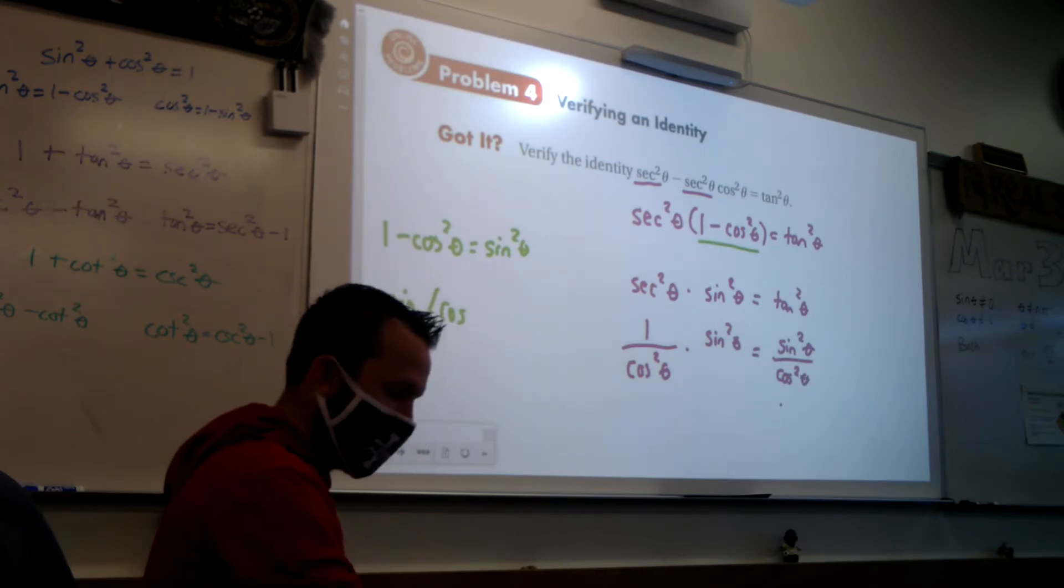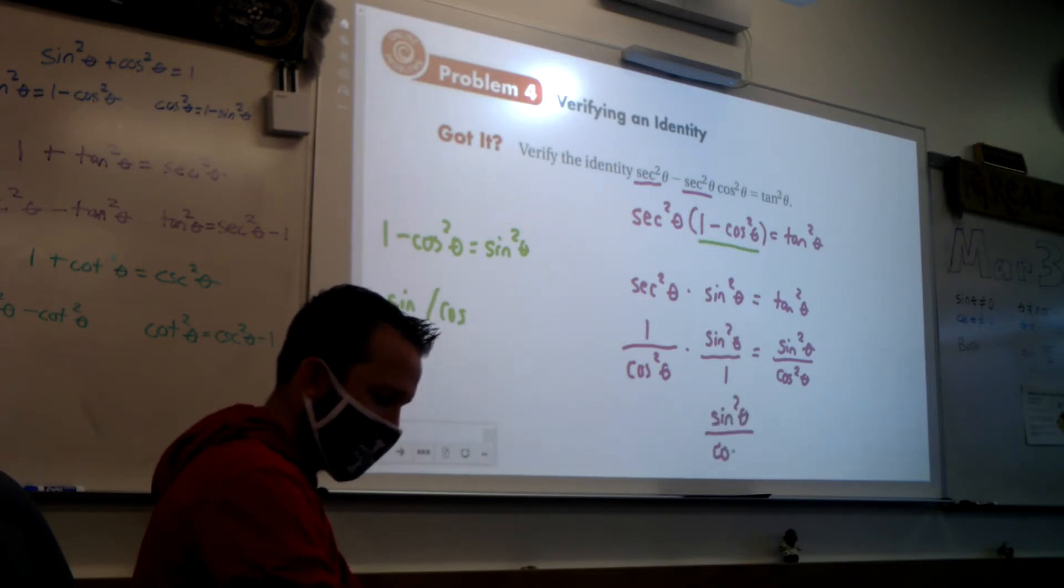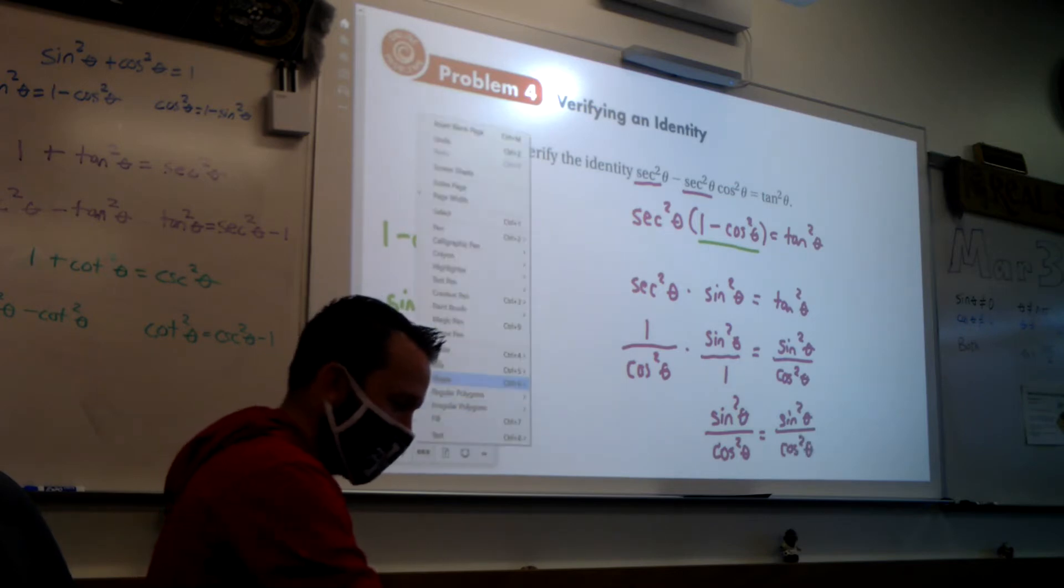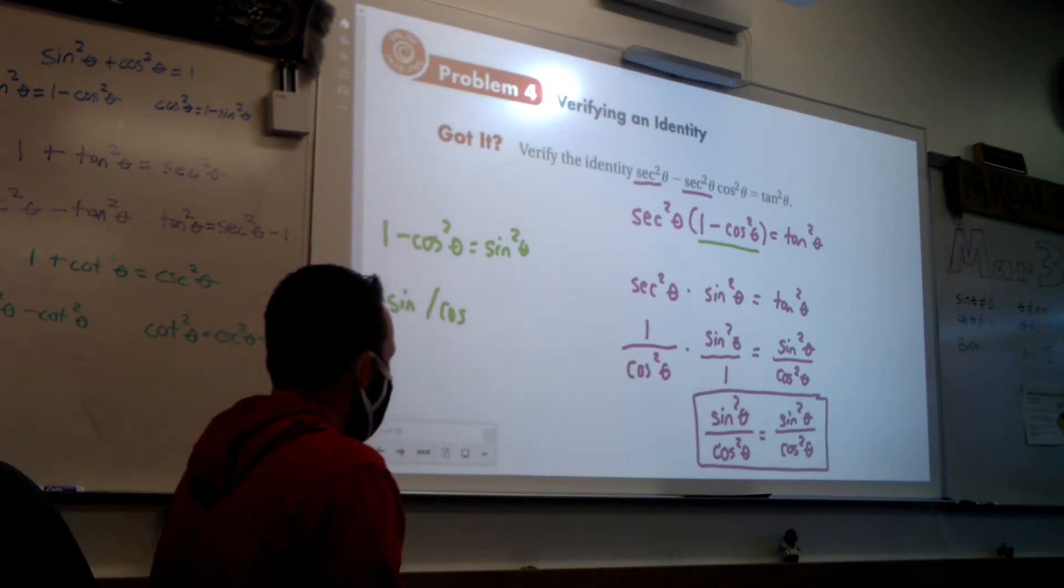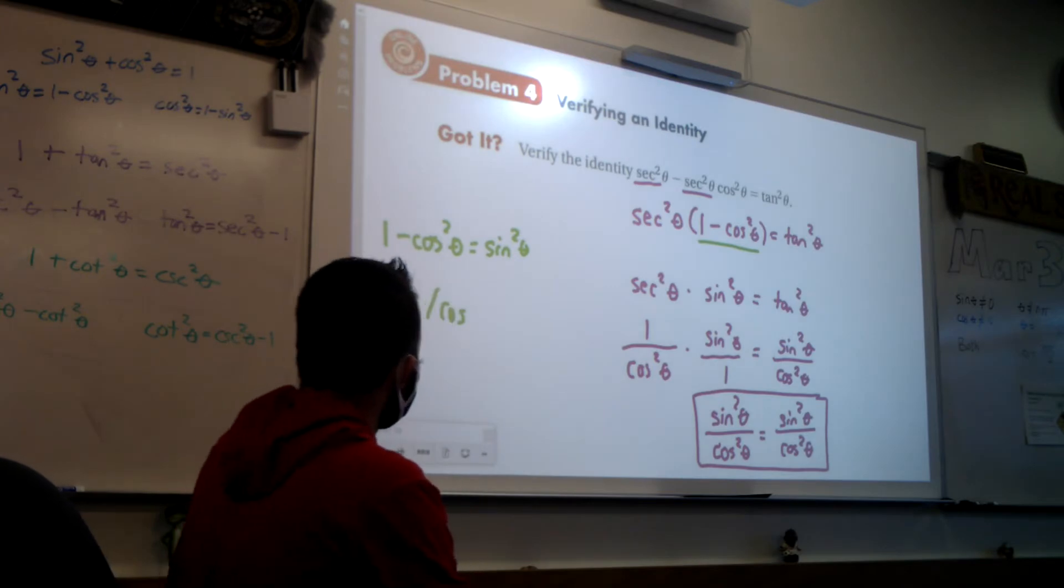My sine squared of theta equals sine squared of theta. So now, let's multiply those straight across. I get sine squared of theta over cosine squared of theta is equal to sine squared of theta over cosine squared of theta. Is that a true statement? Yes, it is. Woohoo! So then, I have proven the validity, proven this identity.